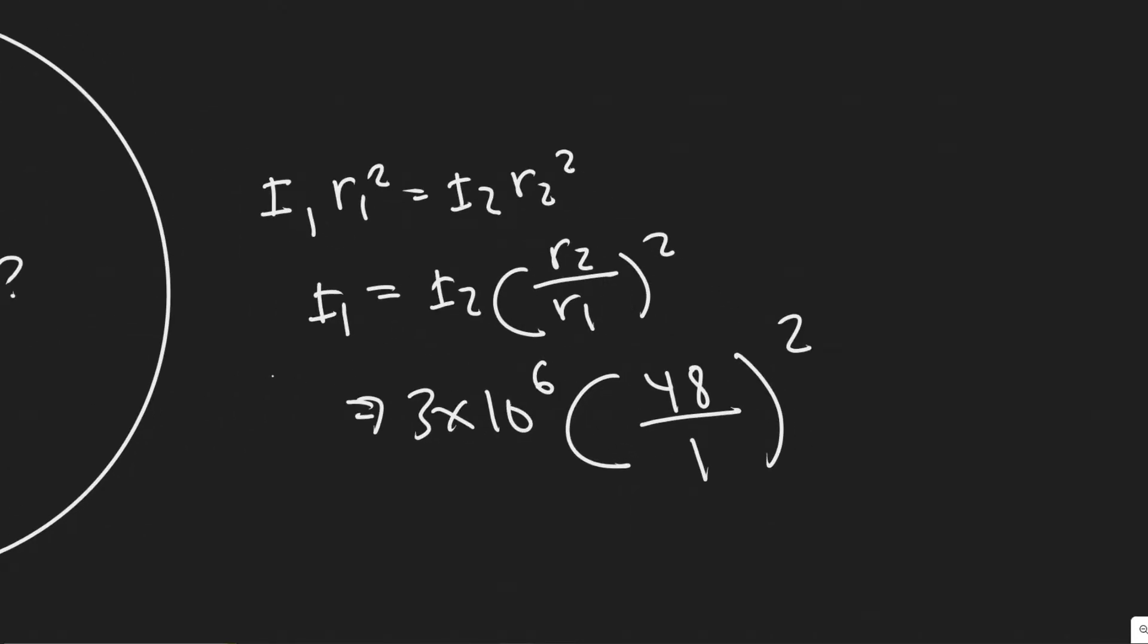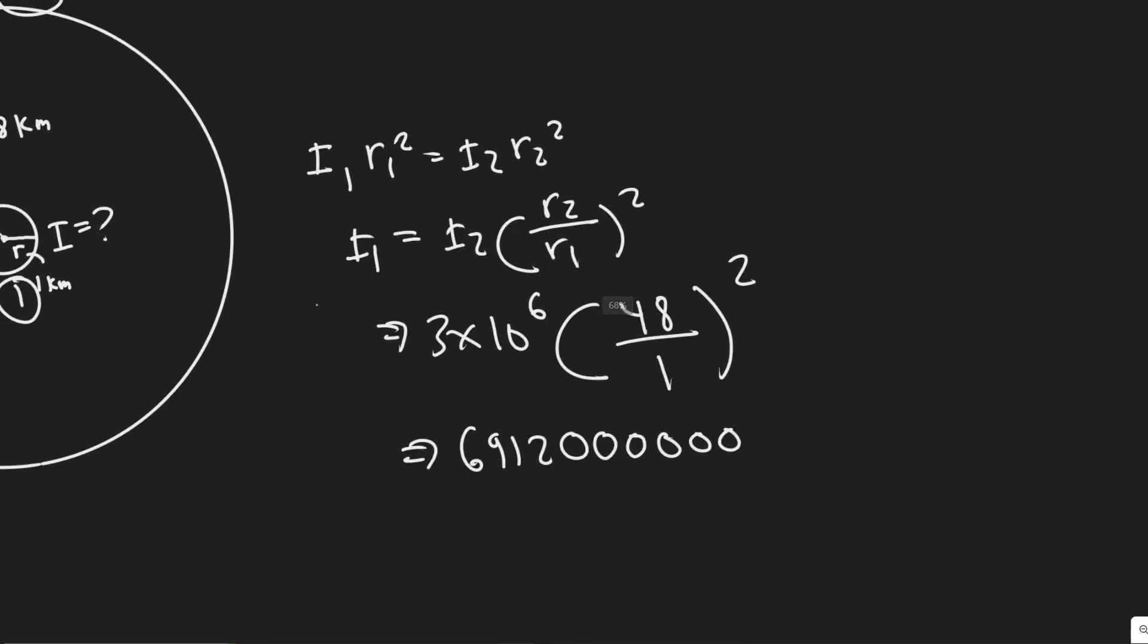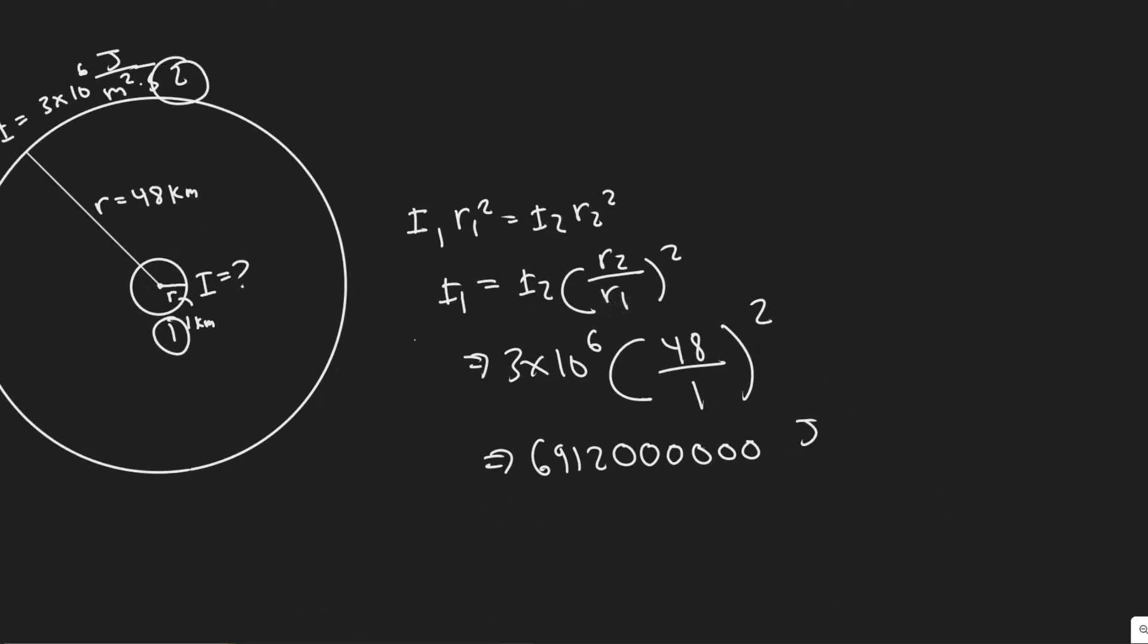So you basically have 48 squared times 3 times 10 to the 6. You'll get a super big value, 691200000. Keep in mind the units of this. So we have this right here.